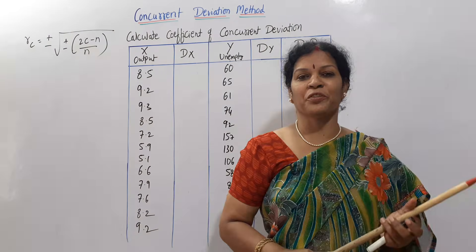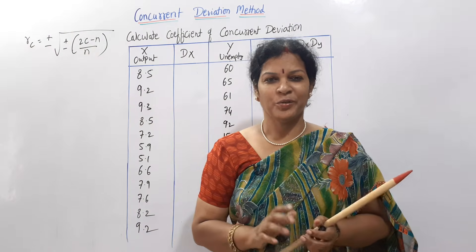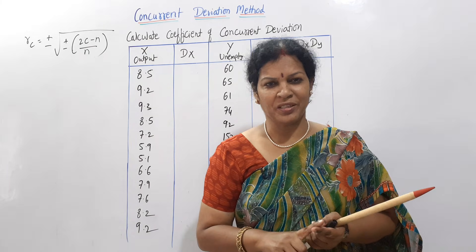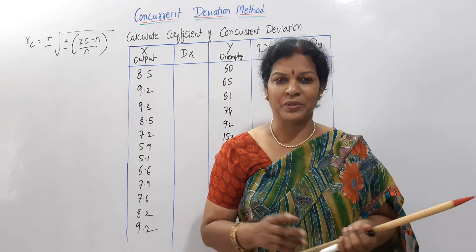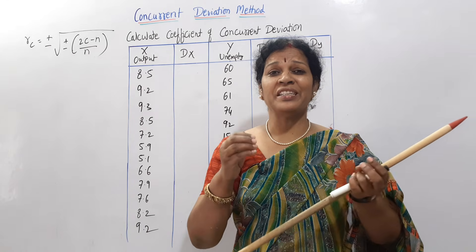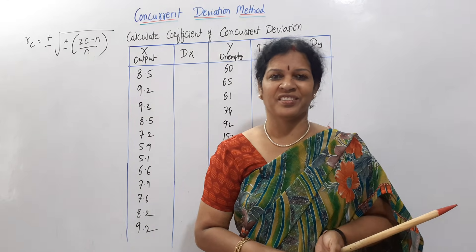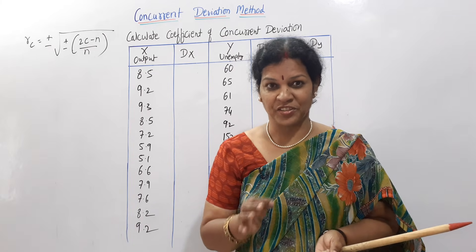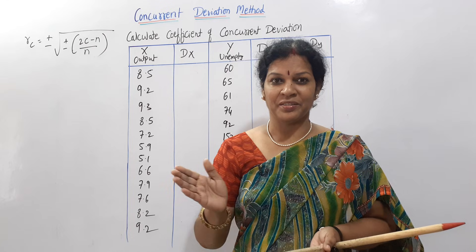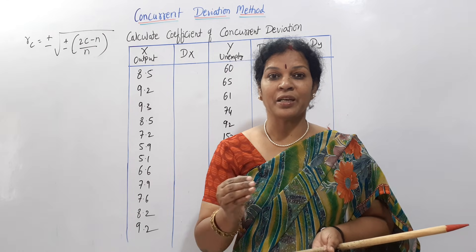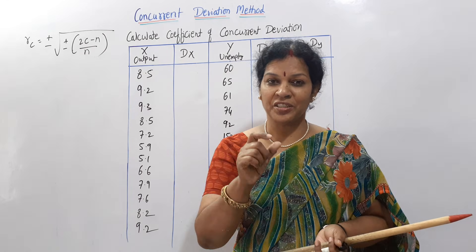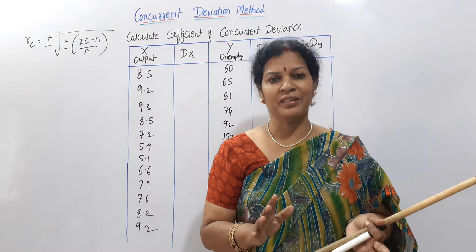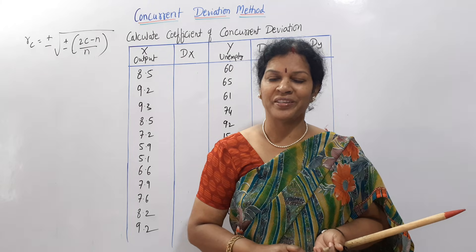Hello dear students, welcome to Devika's Commerce and Management Academy. Today we cover the last method of correlation — the Concurrent Deviation Method. The concurrent coefficient of deviation is one of the easiest methods out of all the correlation methods. It is mainly based on direction: we assign plus or minus signs to each number and then proceed with the calculation. Just focus for five minutes and you will understand everything.